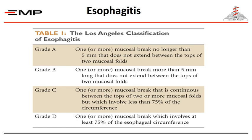This table shows the grades of esophagitis. We have four grades — A, B, C, and D — according to the area of the lower esophagus affected by acid reflux, with Grade D being the worst type.